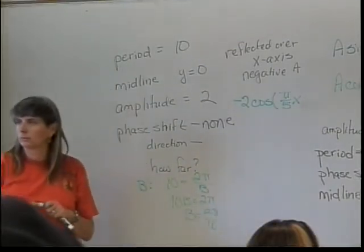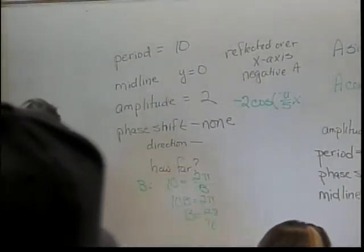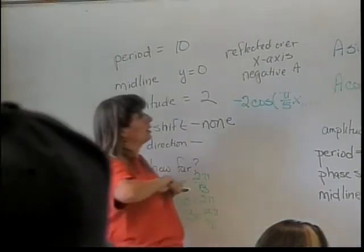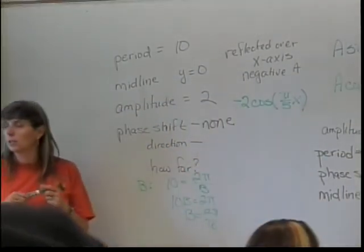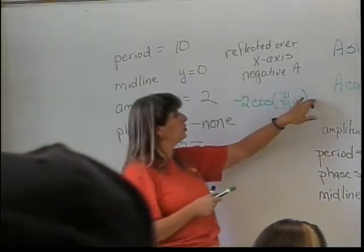What about C? What was C related to? The phase shift. Was there one? Nope. That means I don't need to add anything on there. And what about D? D was related to the midline, which I know is Y equals 0, so it would be just plus 0.